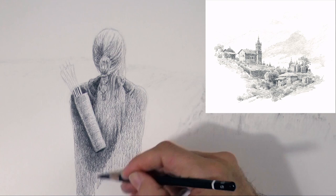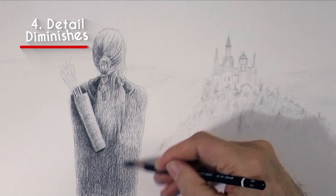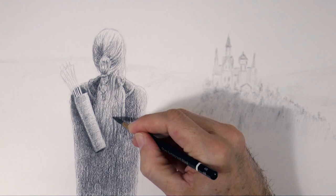Detail diminishes. Atmosphere between the viewer and objects also makes it harder to see details. We may see sharp edges on nearby objects, but with distance, edges appear to soften.